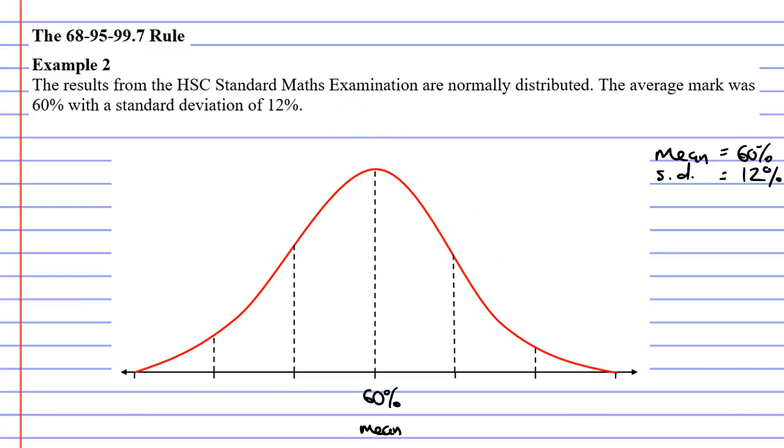Because our standard deviation is 12%, we're going to add on 12 each time. So 60 plus 12 is 72%, because I added on the standard deviation only once. If I add on the standard deviation twice, then I get 84%. And if I add it on again, meaning I've added on three times, I now get 96%. Let's go to the left side.